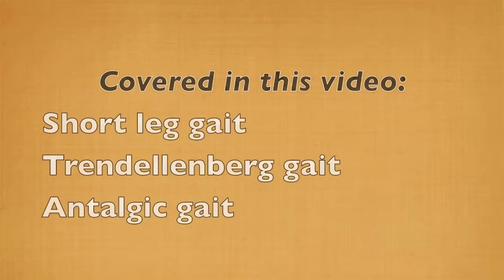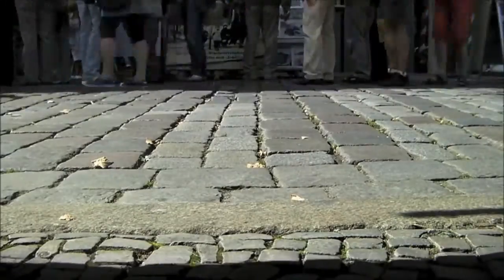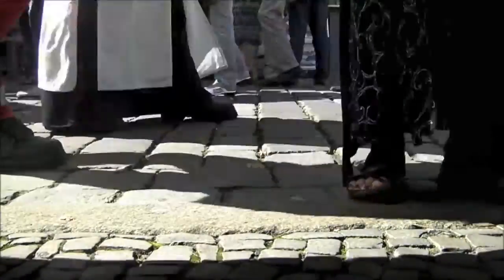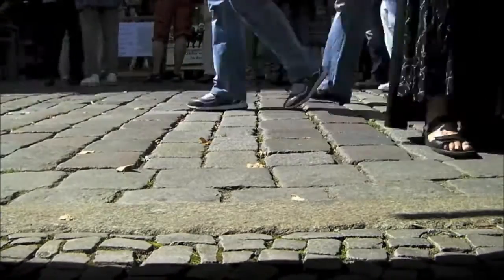The three abnormal gaits that we will discuss today include the short leg gait, the Trendelenburg gait, and the antalgic gait. To understand these types of gaits fully, we must first understand the normal process of walking.